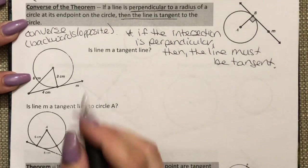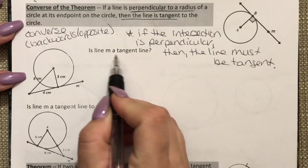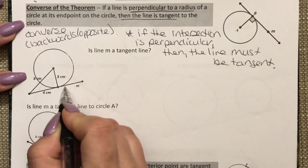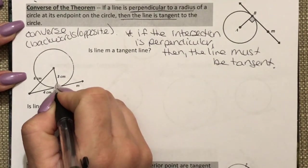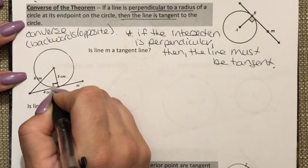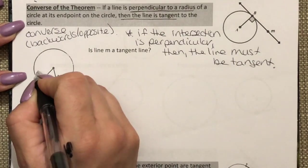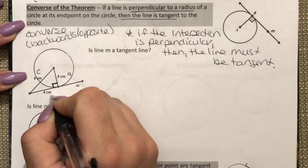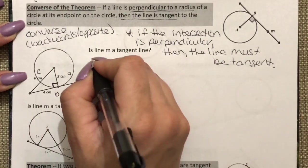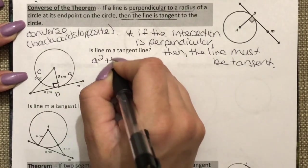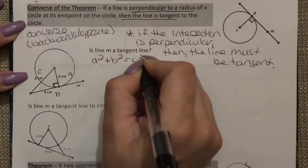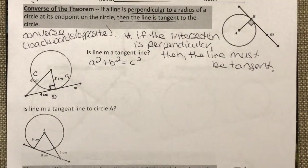So it wants to know is this line tangent. Well if it was tangent this would be a 90 degree angle, this would be my hypotenuse and that would be my A, B, and C. So if I plug this in and I get a true statement that means that it is in fact tangent.